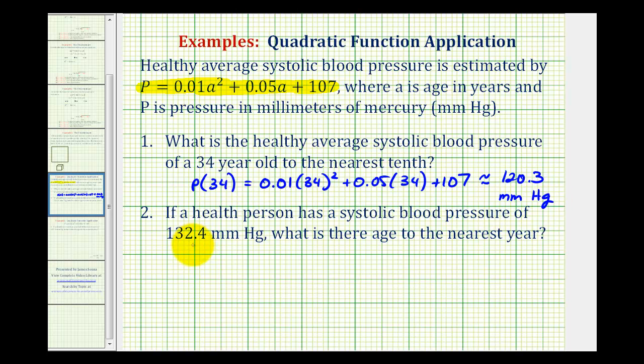Number two is going to be a little bit more involved. If a healthy person has a systolic blood pressure of 132.4 millimeters of mercury, what is their age to the nearest year? So we're going to need some more room for this. Let's go ahead and go to the next slide.